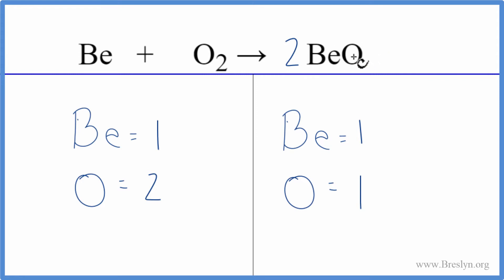This two applies to everything though. So I have one beryllium times two, that'll give me two of those. But for oxygens, I have one oxygen times the two. That gives me two oxygens. So now the oxygens, they're balanced.